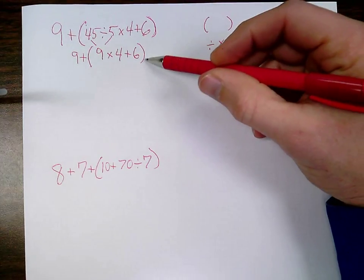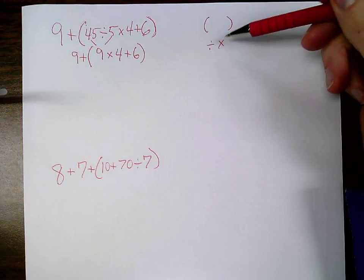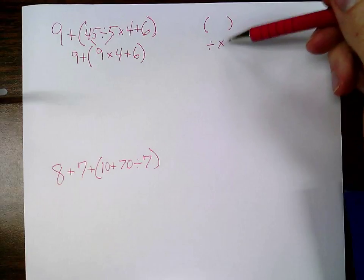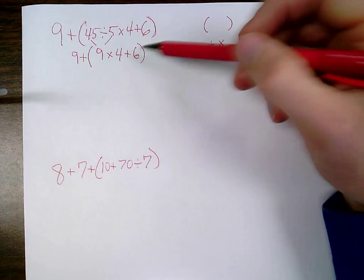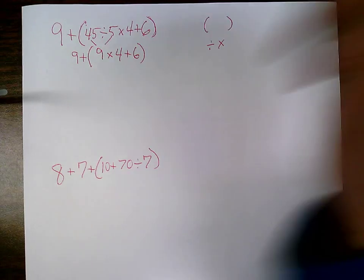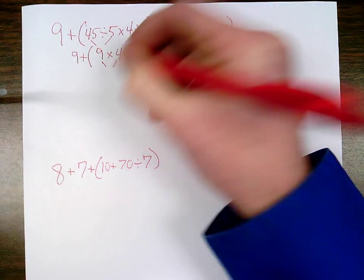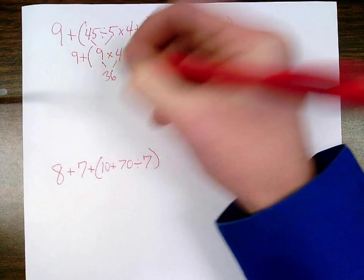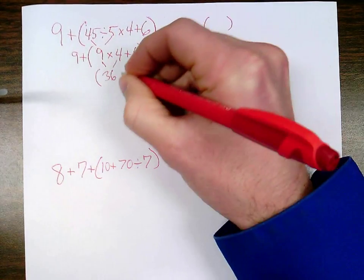I still have my parentheses there and as I said, I'm on the step of doing division and multiplication. I see in my parentheses I have multiplication there, so I do that one. 9 times 4 is 36. Bring down everything else.